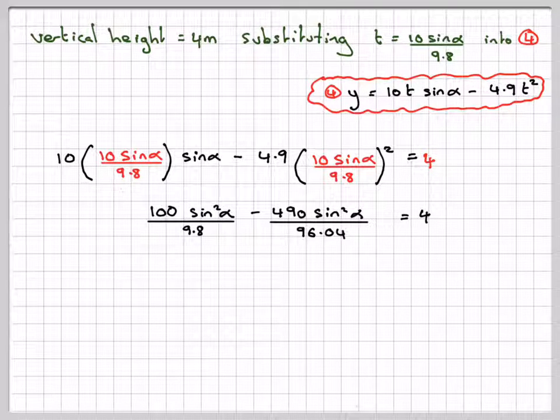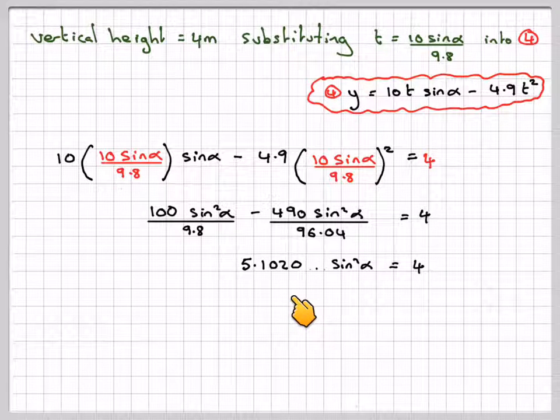Using the fraction button on my calculator, I did 100 over 9.8 minus 490 over 96.04, which gives 5.1020 times sin alpha squared.